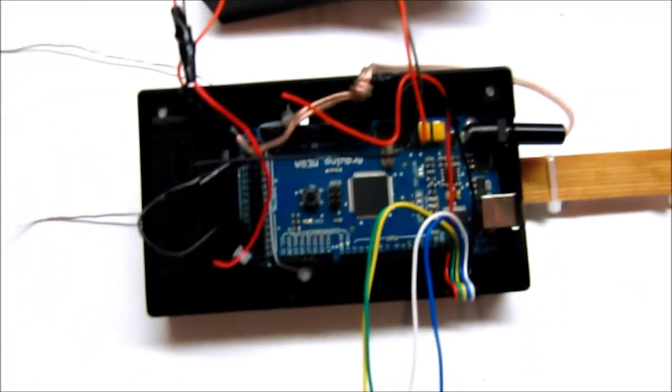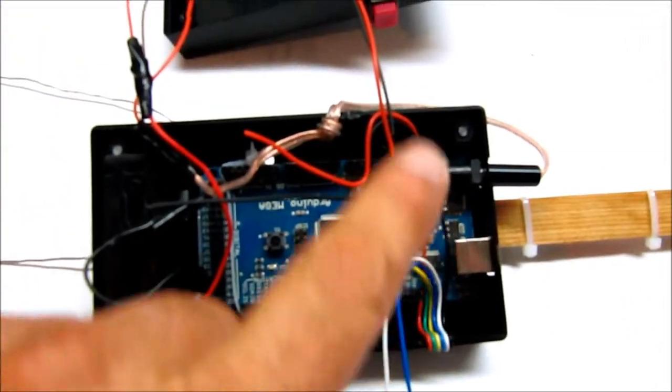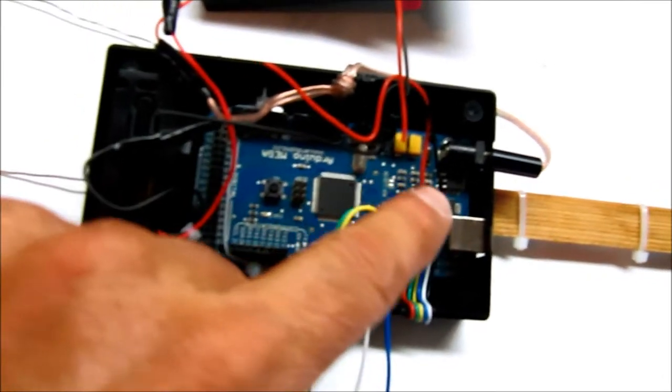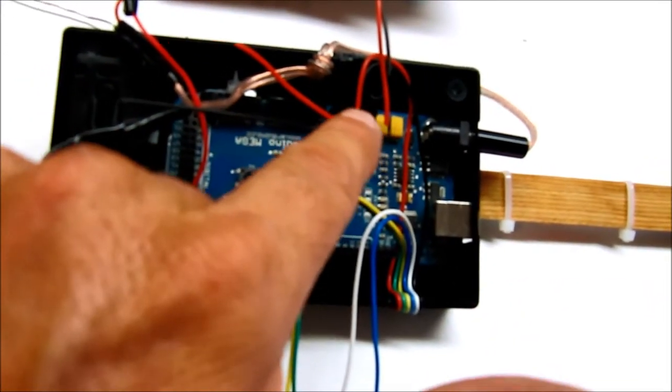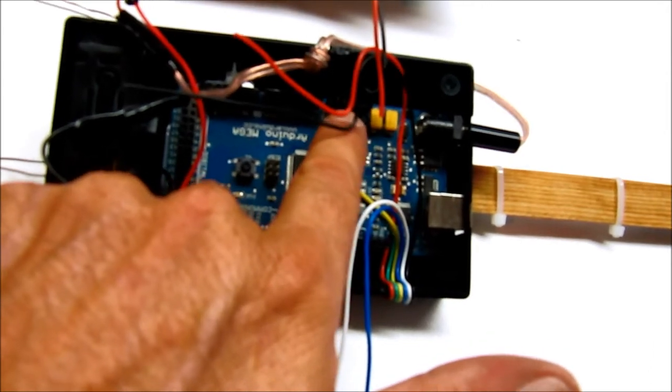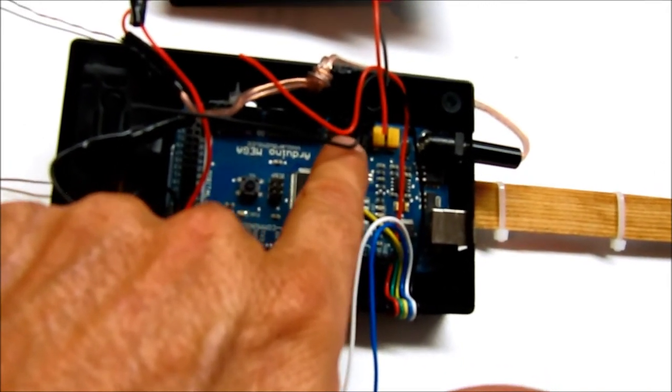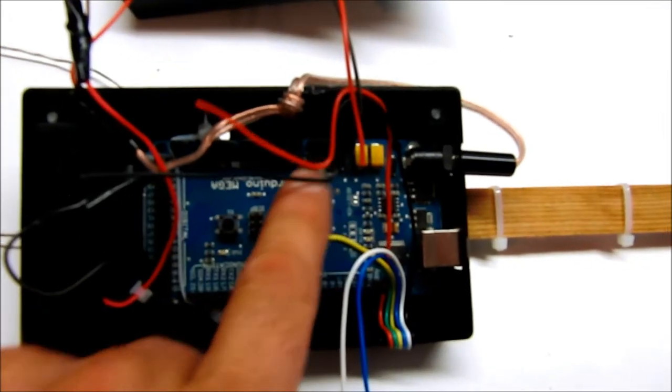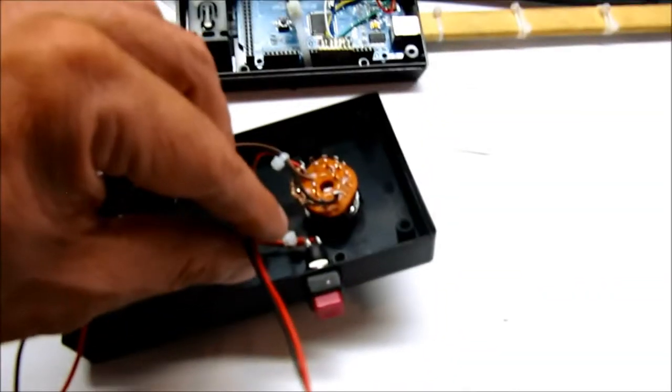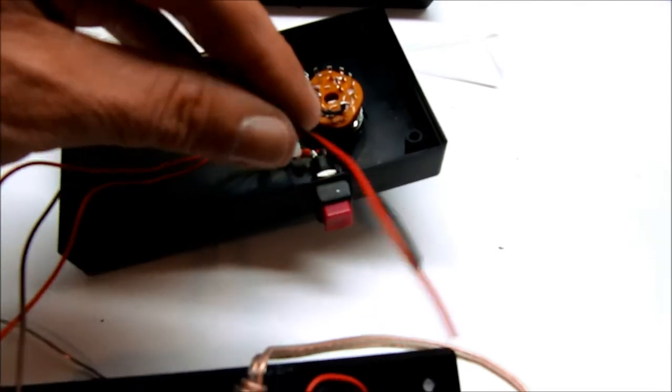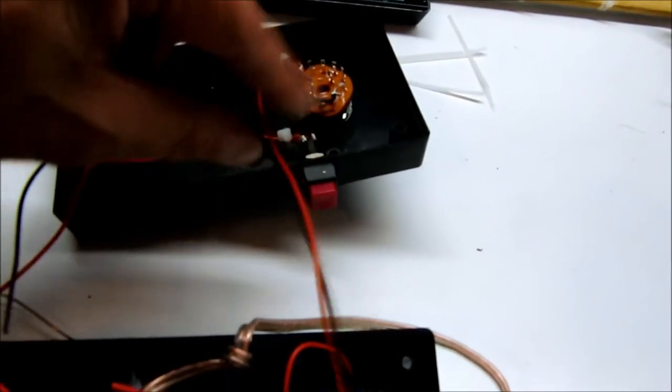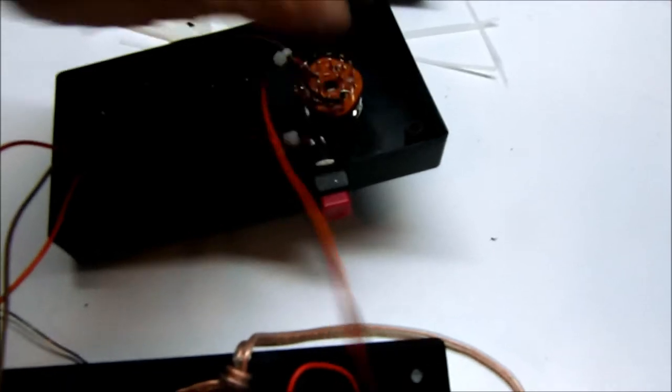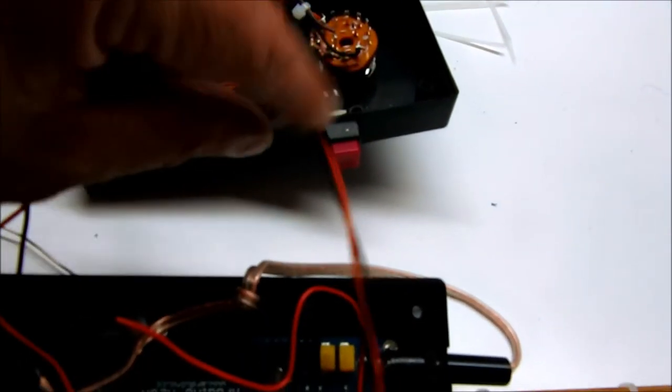I've got the wires now routed where they need to go. I've got the black and red wire routed to the side where the plus five volts and the ground pins are on the Arduino here. And also the black and red, or positive and negative, from the rotary switch will also be connecting to those same pins. So I've got those two wires routed kind of to the same area.